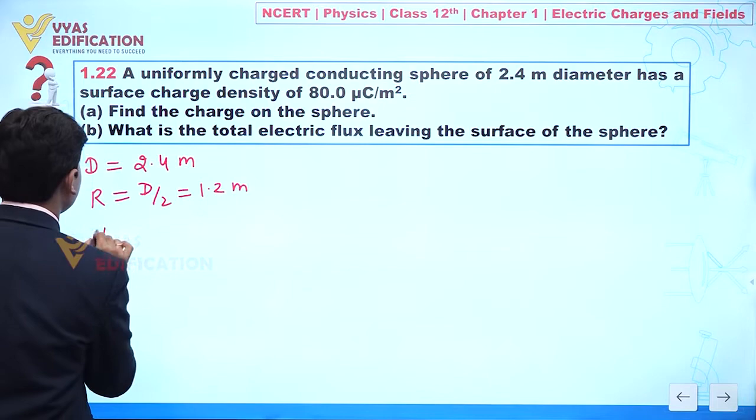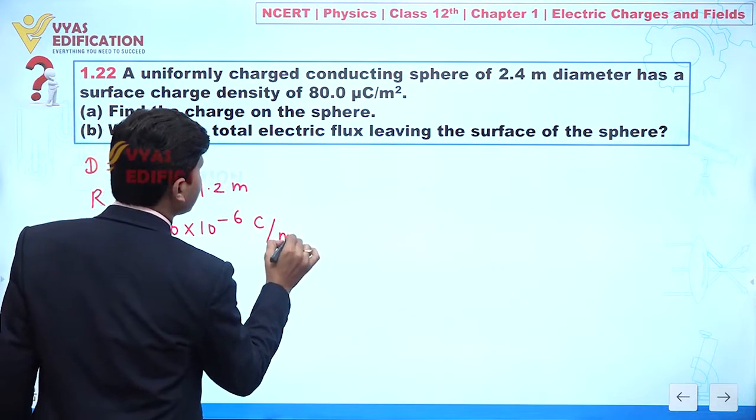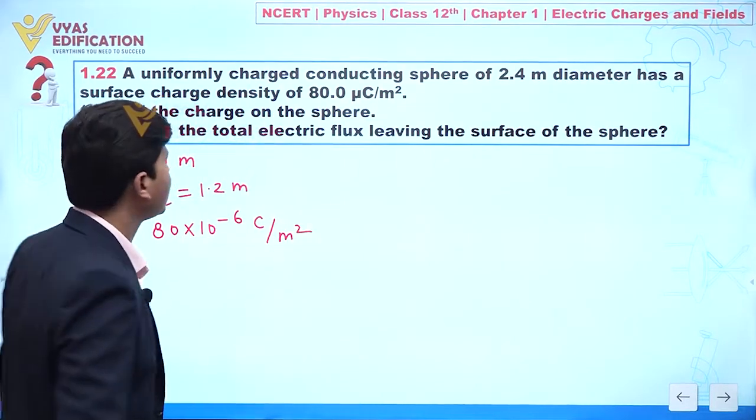Surface charge density is given to you 80 into 10 to the power minus 6, this is coulomb per meter square.